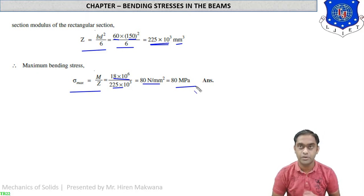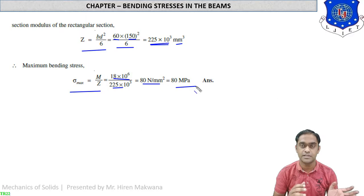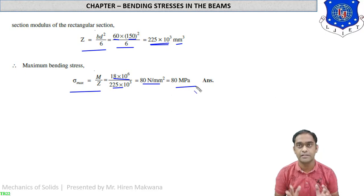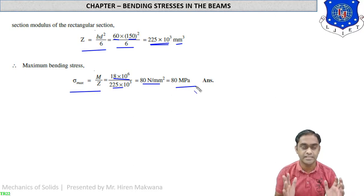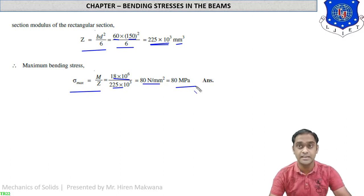This is the method to find maximum bending stress at any layer of the beam. First calculate bending moment — for a simply supported beam it is M = WL/4. Then find section modulus Z = bd²/6 for rectangular section. Finally apply sigma = M/Z. Remember these formulas and you can solve numericals easily. Let us see more examples.